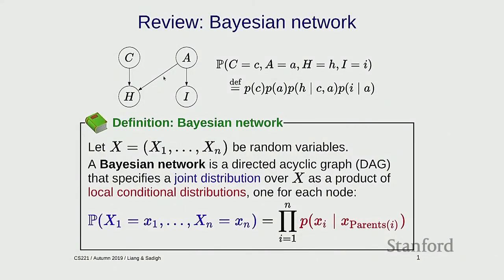What is a Bayesian network? You have a set of variables which are nodes in a graph — for example, whether you have a cold, whether you have allergies, whether you're coughing, whether you have itchy eyes. These nodes are related by a set of directed edges which capture various dependencies. For every variable, you have a local conditional distribution specifying the distribution over that variable given its parents. You multiply all these local conditional distributions together to get the joint distribution over all the variables.